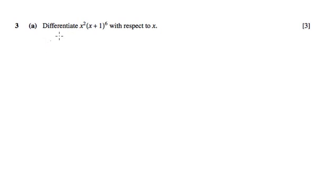So in order to do that, we're going to use the product rule, which is to differentiate the first thing, which is 2x, and leave the second thing alone, which is still x plus 1 to the 6.